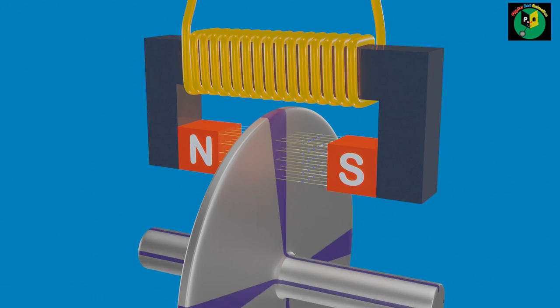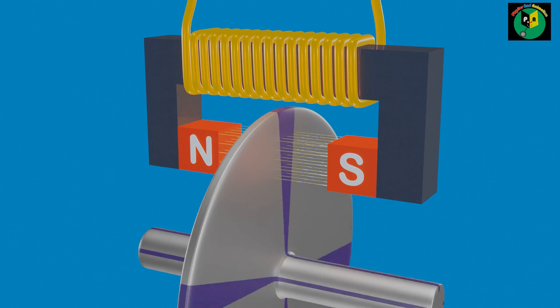Due to the rotation of the metallic disk, the magnetic flux passing through the surface changes, which induces an Eddy Current in the rotating disk to oppose its rotating motion.